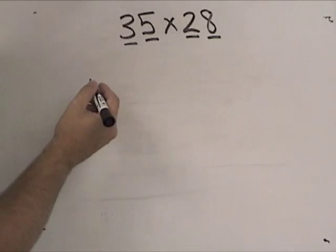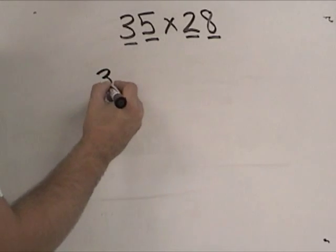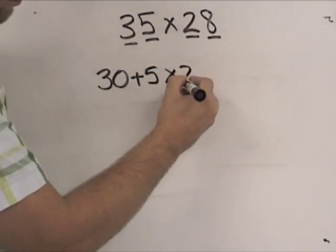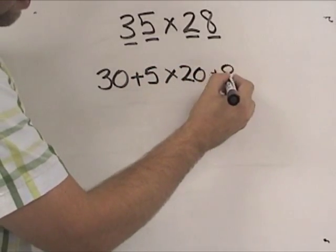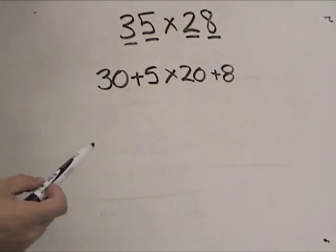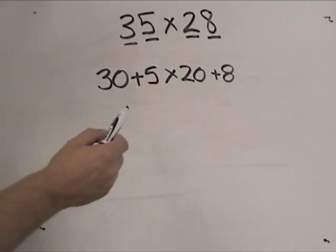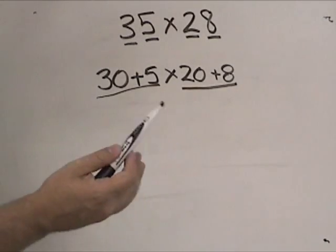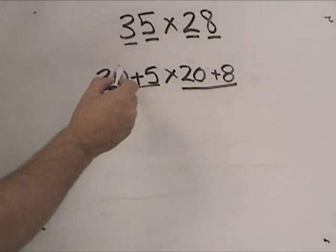So we can take these apart, we can do it as 30 plus 5 times 20 plus 8. If we're going to do this, then we have to make sure we multiply both of these parts by both of these parts. So if we think of combinations, there's actually four different combinations we can do.